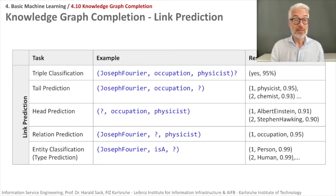Relation prediction means you present the system a subject and an object, and you have to predict the relation between them, the predicate. If you use Joseph Fourier as a subject and physicist as an object, the most likely thing that the system should predict would be occupation, because Joseph Fourier was a physicist, so his occupation was being a physicist.